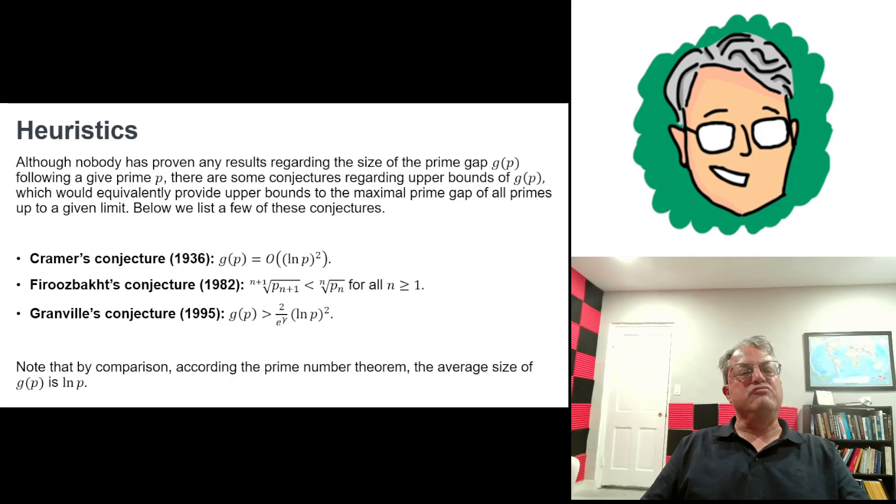He didn't give any value for this constant in front of ln(P) quantity squared, but Granville did. He said that this constant has to be greater than or equal to 2 over e to the gamma, where gamma is the Euler-Mascheroni constant. And I believe this constant 2 over e to the gamma is a little bit bigger than 1. I haven't calculated this number, but it's basically about 1.1, I think. So it's like 1.1 times ln(P) quantity squared, something like that. And he said that the gap, the maximal gap, is greater than this. And then just by comparison, according to the prime number theorem, the average size of the prime gap following P is about the natural logarithm of P. So all these bounds are a lot bigger than that. They're more like the square of the natural logarithm of P.